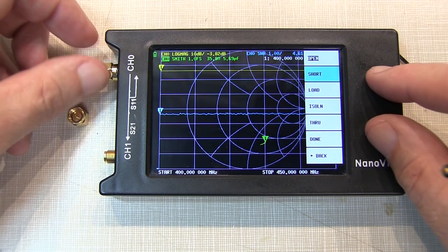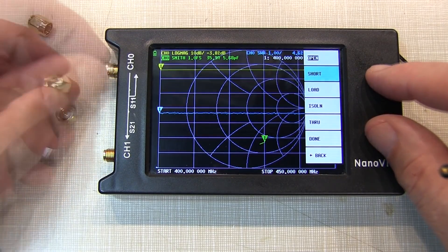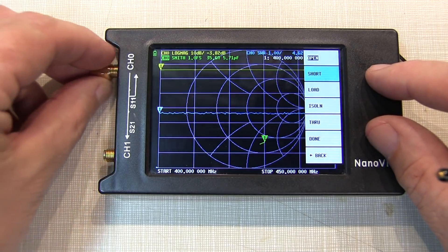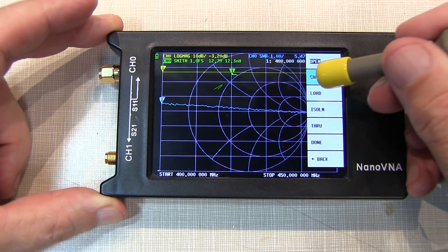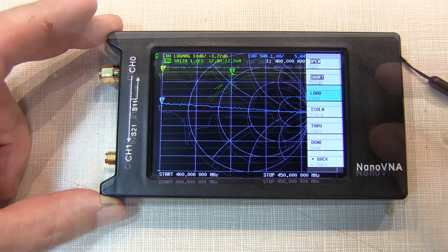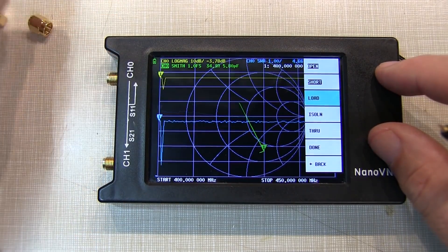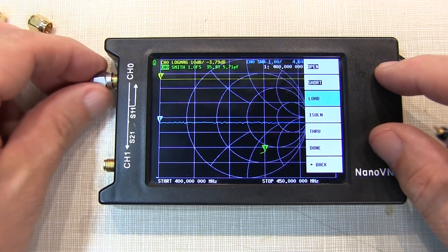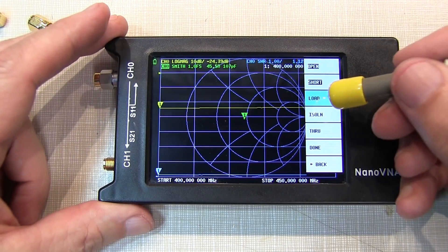So we remove the open, and attach the short, and then touch short. Now once the short is done, we're ready to do the load. So we remove the short, and attach our 50 ohm match for the 50 ohm load, and touch load.